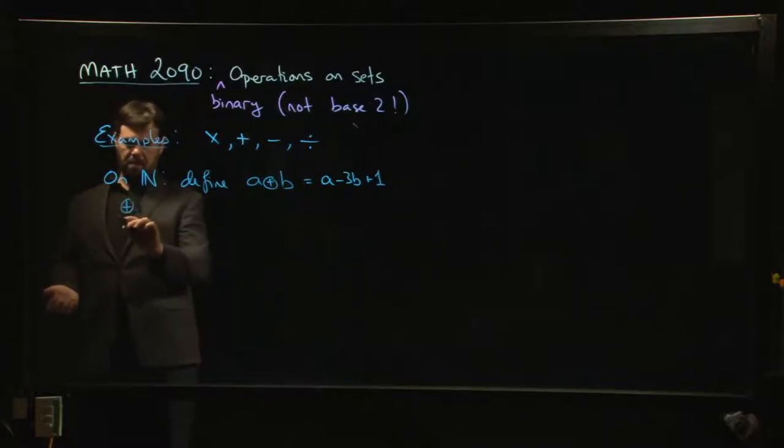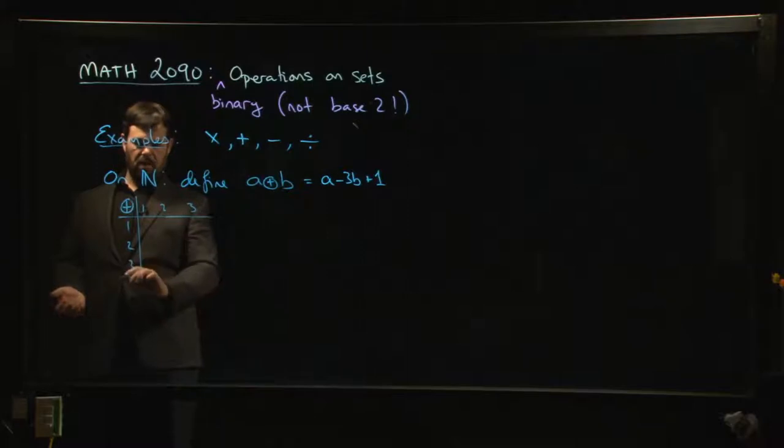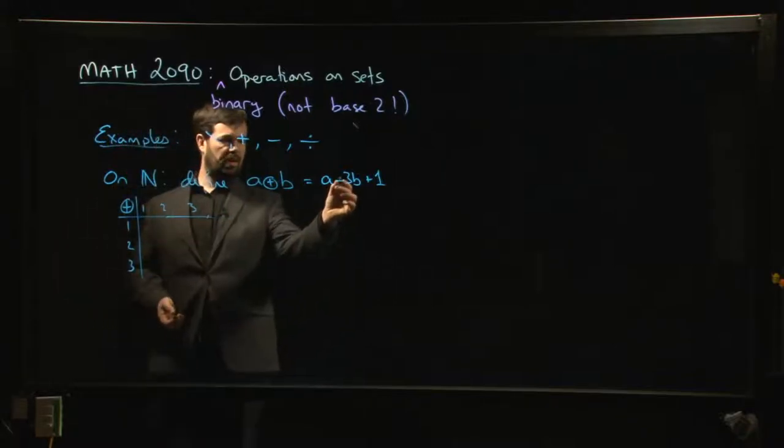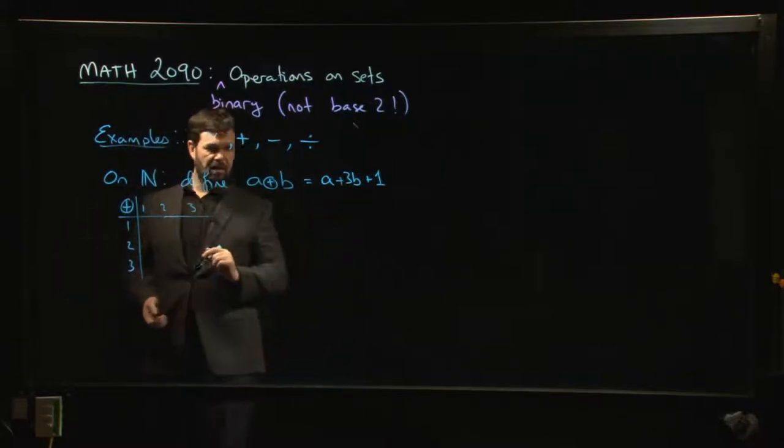And then you could even start doing like a table for the operation, right? You could say, okay, what happens when we take, say, 1, 2, 3 as inputs? So if we do 1 ⊕ 1, what do we get? We get—well, maybe let's do plus so we don't run outside the set. So we did say 1 + 3 times 1 + 1, so 1 + 3 + 1 more is 5, right?